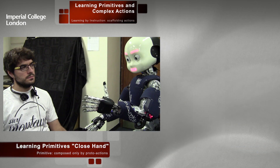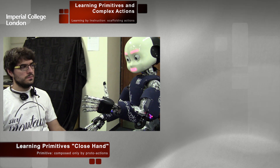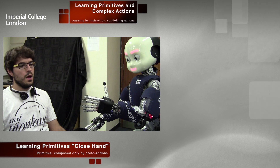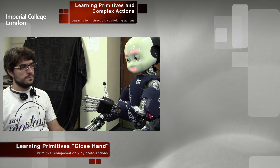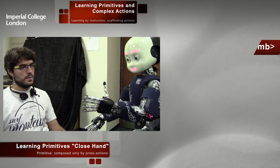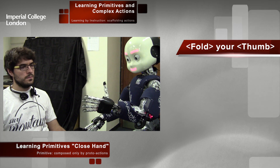What do you want to teach me? I will teach you a primitive. Let's learn some primitive. What is the exact primitive that you will teach me? Close your hand. Alright, can you describe how I can close my hand, please? Fold your thumb. I fold my thumb.